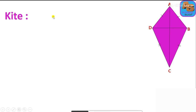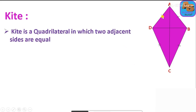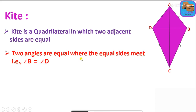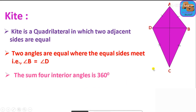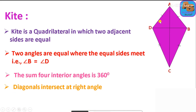Next is kite. A kite is a quadrilateral in which two pairs of adjacent sides are equal. Two angles are equal where the equal sides meet: angle B is equal to angle D. The sum of the four interior angles is 360 degrees.